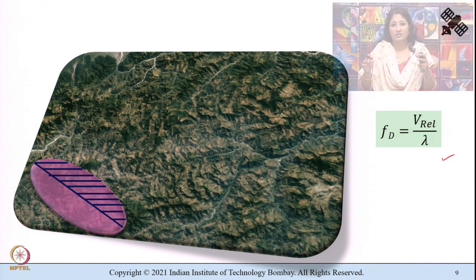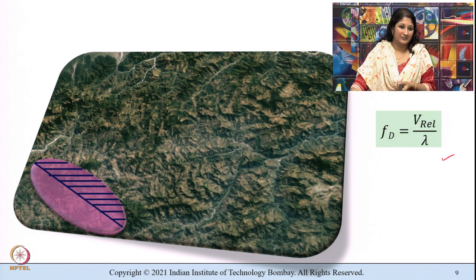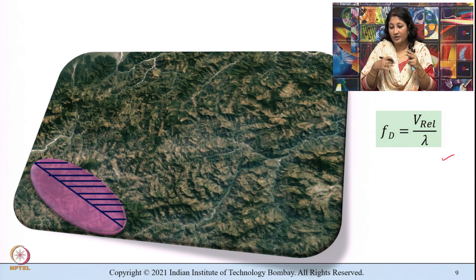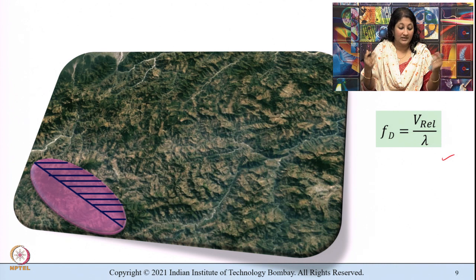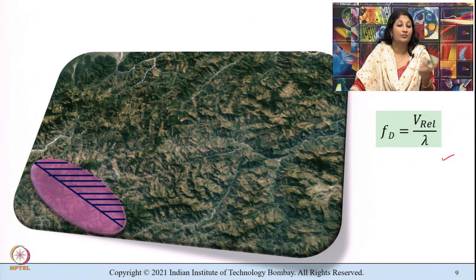Even though the instrument is moving, for convenience we have considered the ground as stationary. Equivalently, we can consider the ground surface as moving through the footprint. As the ground surface moves through the footprint, there is a history of return echoes generated from the target in a continuous sequence, and this shall approximately cause a linear shift in frequency.